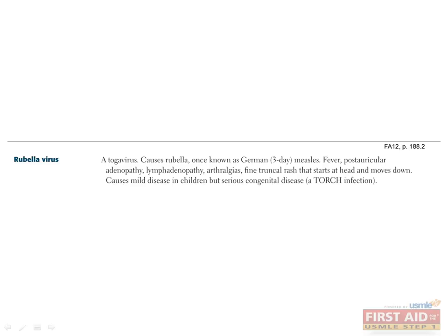This togavirus causes German 3-day measles (rubella), which presents with fever, postauricular tenderness, lymphadenopathy, arthralgias, and a fine maculopapular truncal rash. In children, it causes a mild disease, but it can readily cross the placenta and is highly teratogenic as a congenital disease, and is one of the TORCH infections. Congenital rubella can cause deafness, blindness, and/or heart and brain defects.